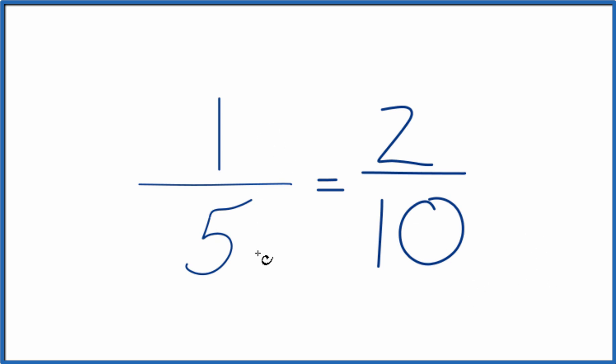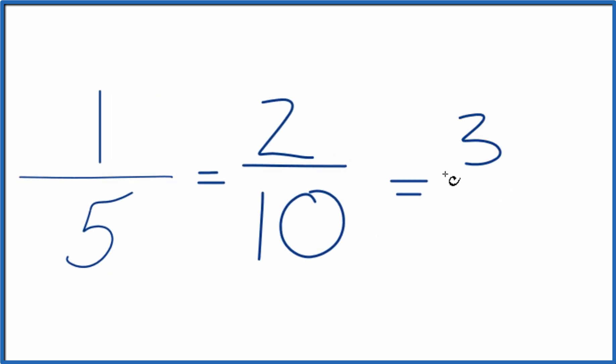Let's multiply the numerator and denominator by 3. So 1 times 3, that's 3. 5 times 3 is 15.